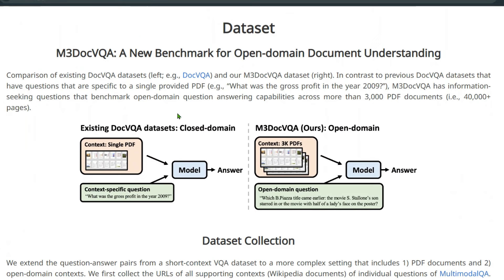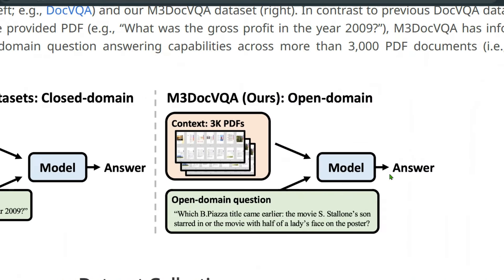They are also releasing a new benchmark called M3DocVQA, a more advanced benchmark that not all models or combinations of models handle well. M3DocVQA has a large number of PDF files and many pages for the model to tackle. The existing DocVQA dataset has a single PDF and asks a context-specific question like 'What is the profit in the year 2009?' — and the model spits out the answer.